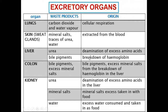Excess proteins are deaminated — the amino group is removed and it becomes urea. Bile pigment is a result of the breakdown of hemoglobin. Hemoglobin is an important compound that makes up the red blood cells and gives our blood its red color. Bile pigment and excess mineral salts come from the breakdown of hemoglobin in the liver, and can be excreted through the colon or through the liver.